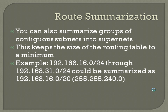For route summarization, you can minimize groups of contiguous subnets into what are called supernets to keep the size of the routing table to a minimum. For example, if you've got a bunch of Class C subnet masks — 192.168.16.0 through 192.168.31.0, all slash 24s — you could summarize these as 192.168.16.0 slash 20, with subnet mask 255.255.240.0, so that instead of having individual .16, .17, .18 all the way through .31 in the routing table, you'll just have a single routing entry.